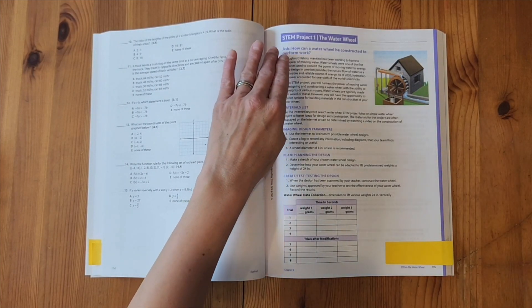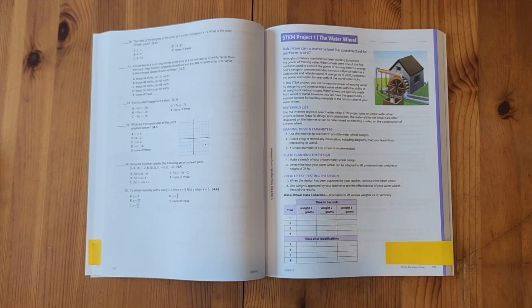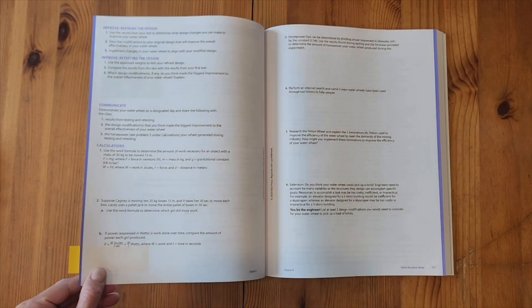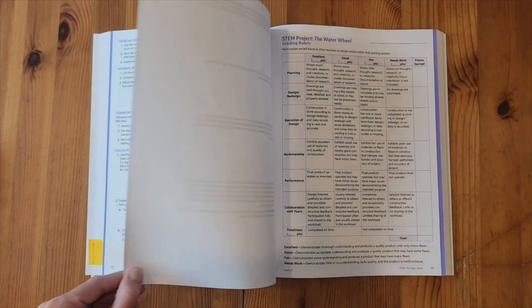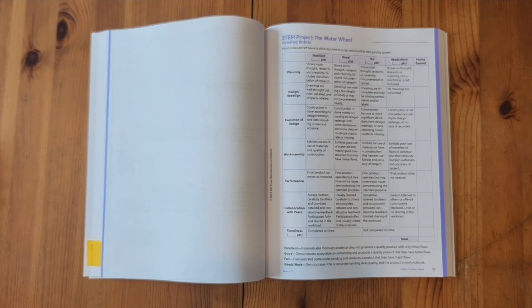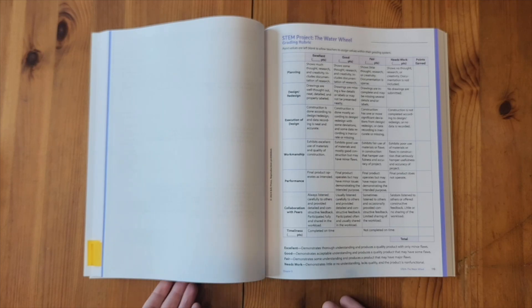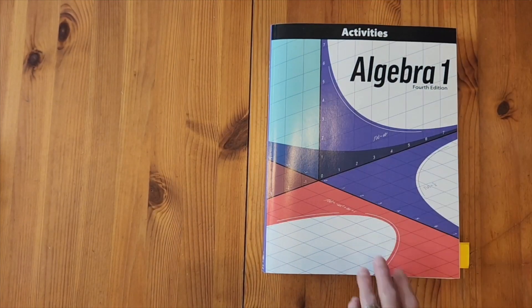And then this is where your STEM project will be located. So you would follow the question, the procedure, the material list, how to do the project, all on this page. And then you would fill out the questions as you are working through it. And a rubric is also included to be able to grade the project when your student is done. So this is the activity book.